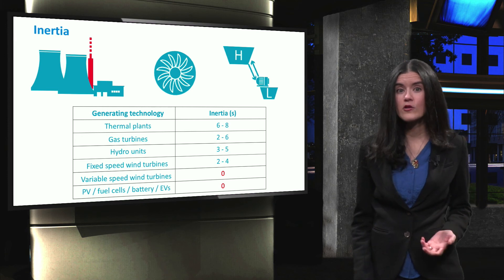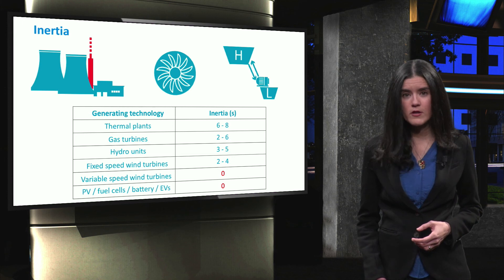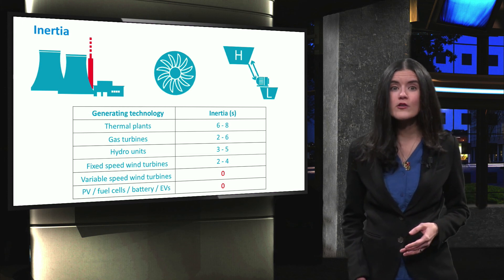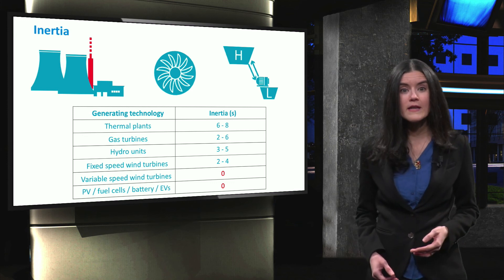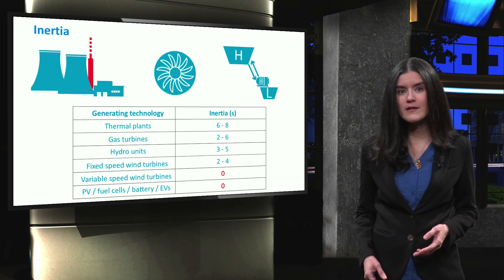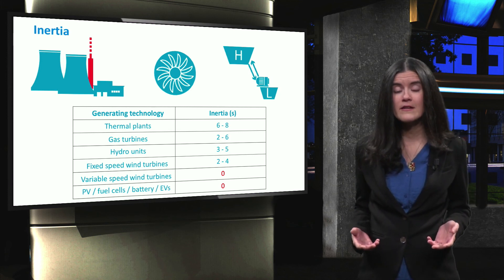This is why microgrids including high penetration of distributed generation units face a lack of inertia. To overcome this challenge, an auxiliary control loop, the so-called inertia emulation loop, can be added to the control system of these units. We will discuss the concept of inertia emulation later in the course.